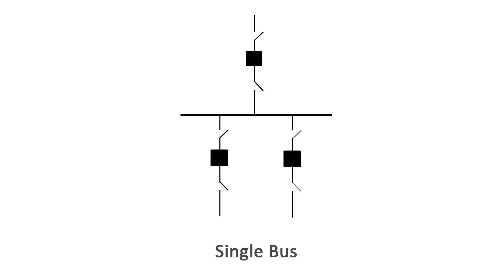Number 1. Single Bus. As the name implies, the single bus substation configuration consists of all circuits connected to a single bus.